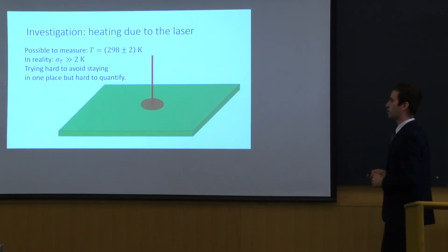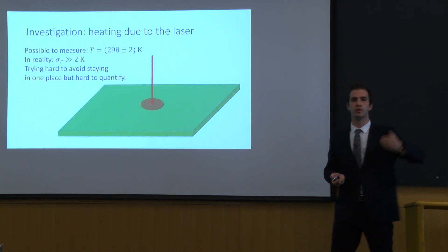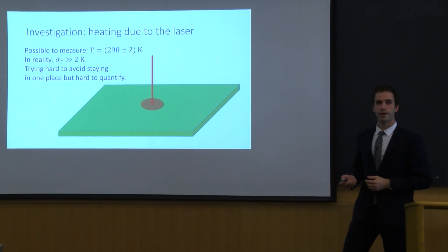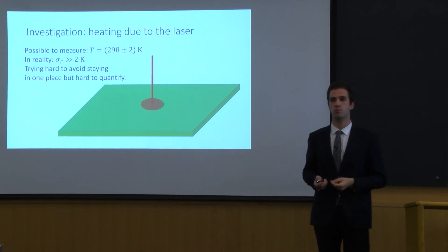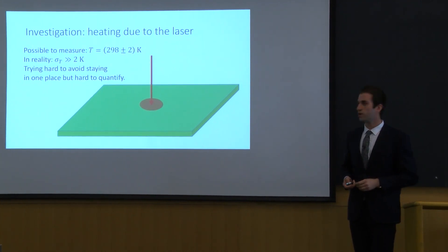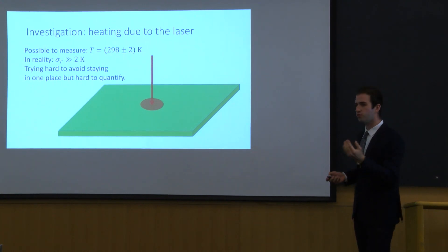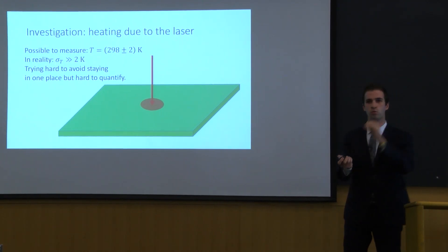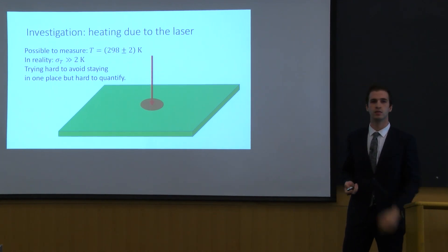The second one is due to the heating of the laser. Essentially what happens is when the laser hits the water it starts heating the vicinity. And this is unfortunate because yes we can measure the room temperature by using the thermometer but the actual uncertainty on the temperature is much bigger because we have extra heating due to the laser. We try diligently to avoid this by moving the laser constantly so that it doesn't stay in one place and heat up a lot. But it's very hard to quantify how exactly it heats up the water.